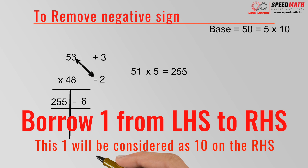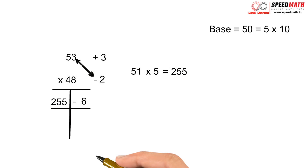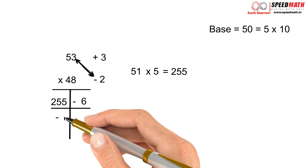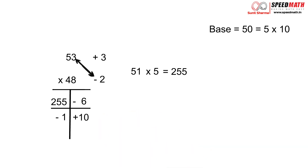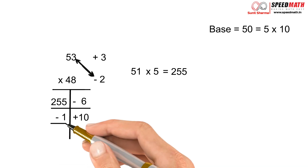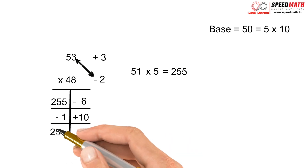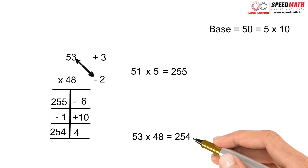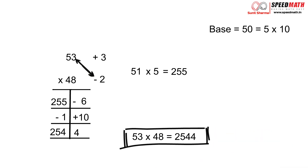To remove the negative sign, we borrow 1 from the left-hand side, which is considered as 10 on the right-hand side. So subtract 1 from the left side and add 10 to the right side. 255 − 1 = 254 on the left, and 10 − 6 = 4 on the right. So 53 × 48 = 2544.